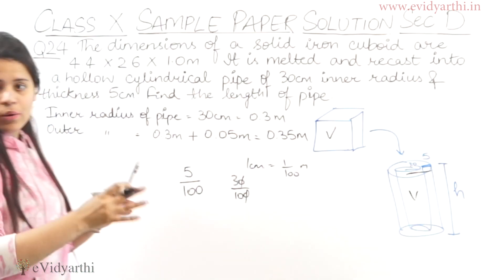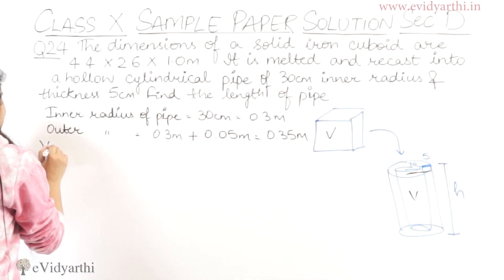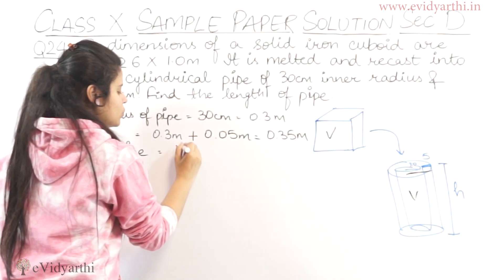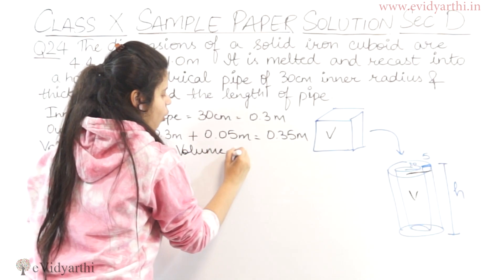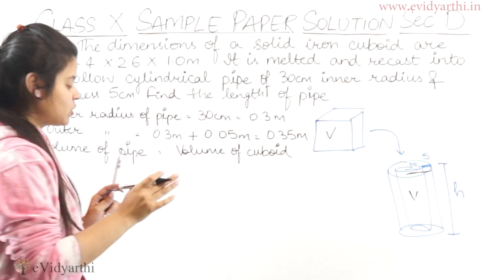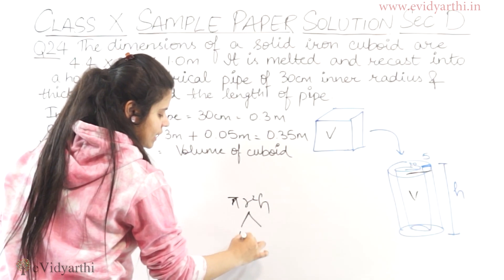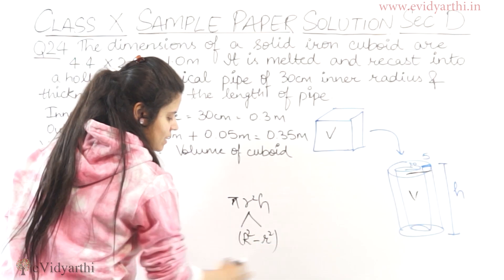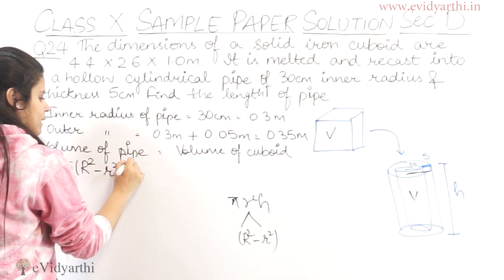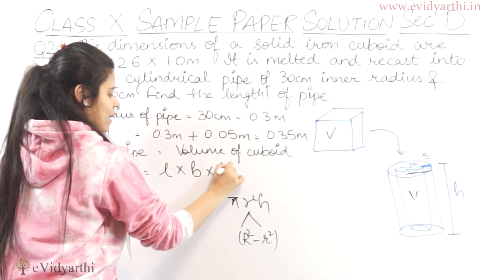Now we have the inner radius and outer radius, so we equate the volumes of both shapes. According to the question, the volume of the pipe equals the volume of the cuboid. The volume of a hollow cylinder is π(R² - r²)h, so: π(R² - r²) × h = length × breadth × height.